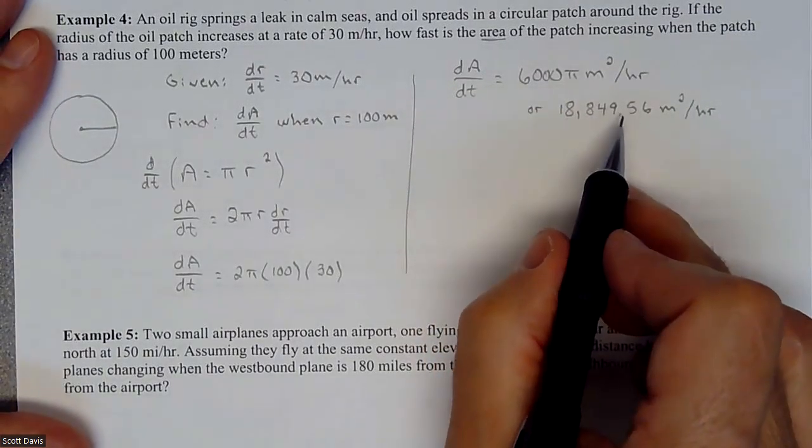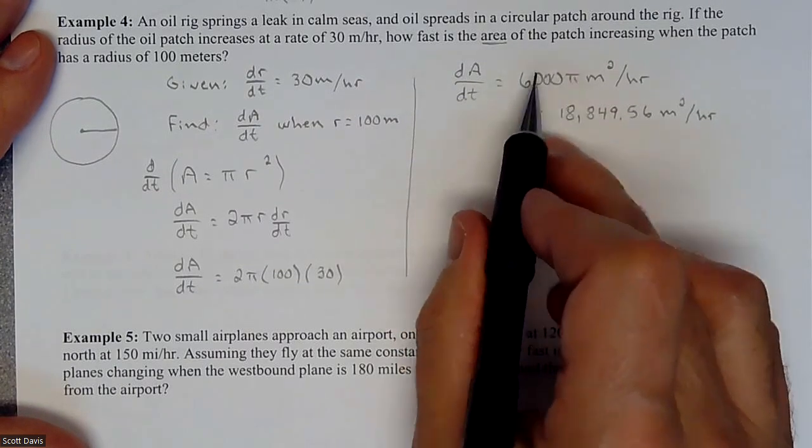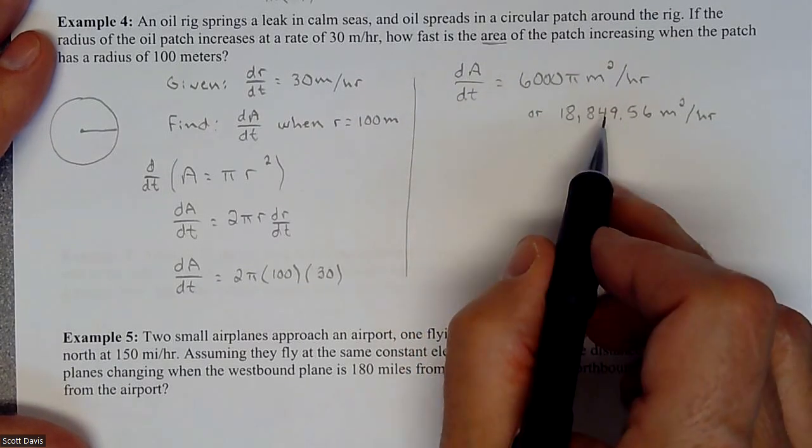I always like to, especially on a word problem, give some sort of a non-pi answer because I don't really know how big that is. So I always like to multiply it out to kind of really get a feel for it.